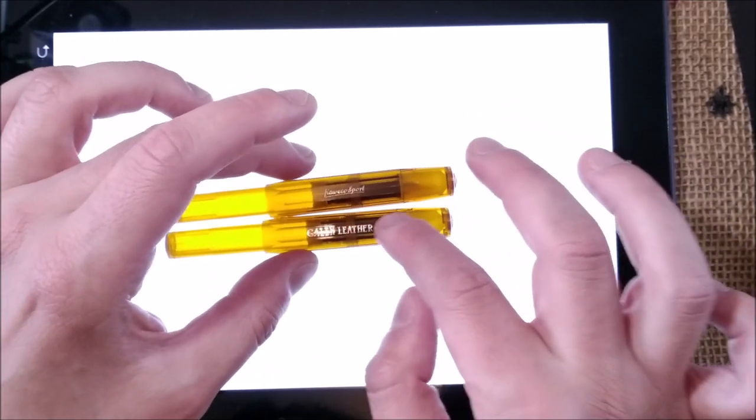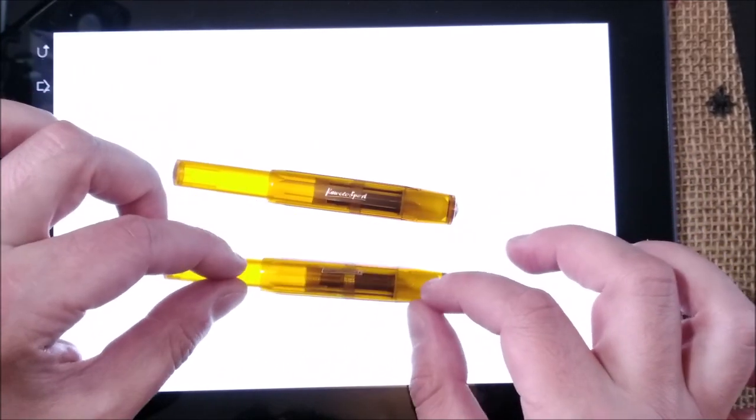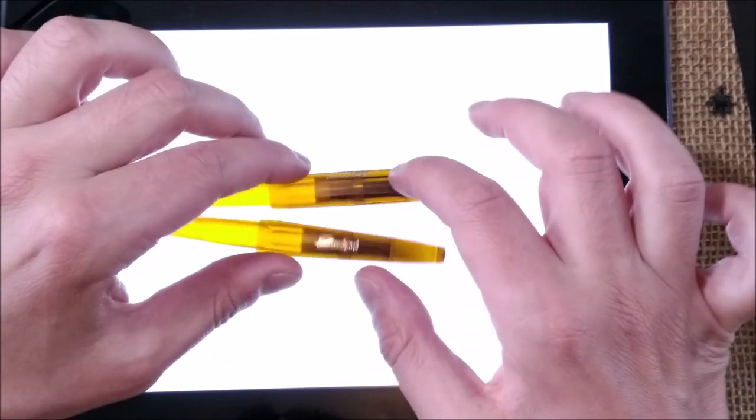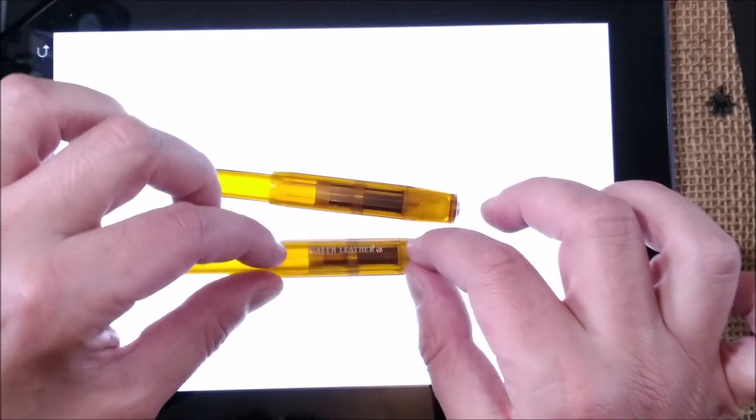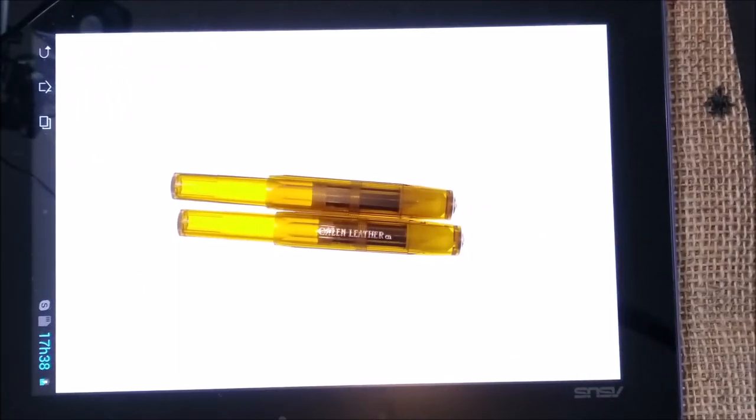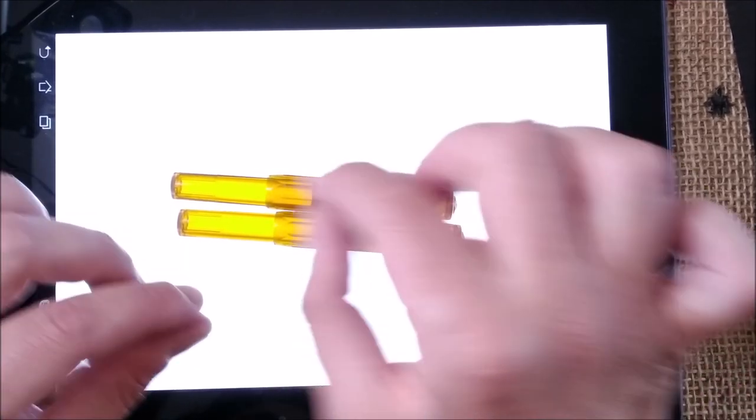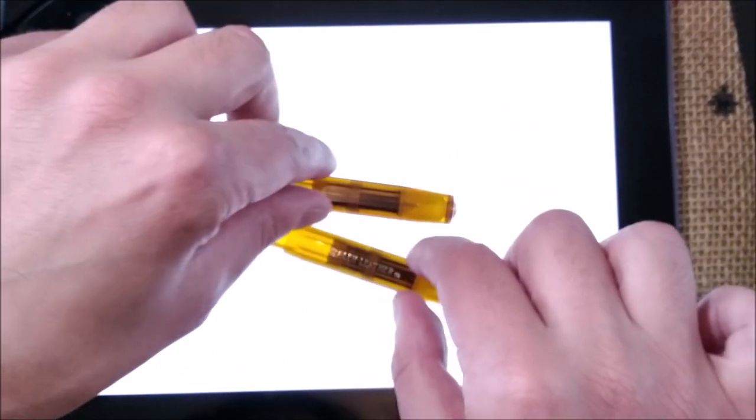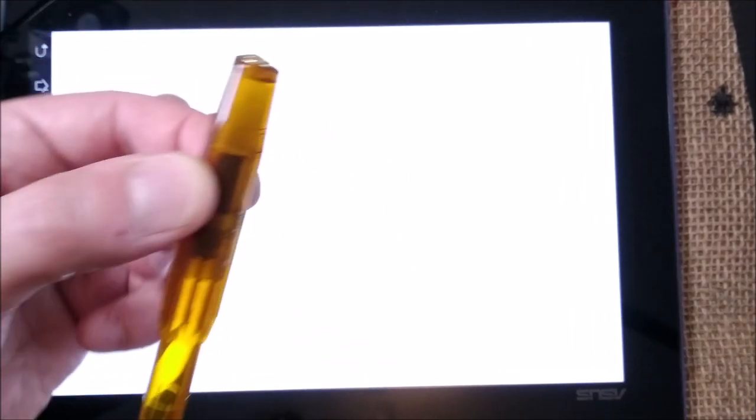You can differentiate them just because one has Kaweco Sport in one side, nothing in the other, and the other one has Kaweco Sport in one side, and Galen Leather in the other. So the color is exactly the same, so if you're searching for this color, you can get the Galen Leather. You can get, if you can still get, because it's now out of production.